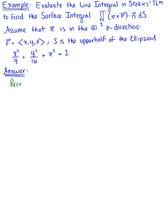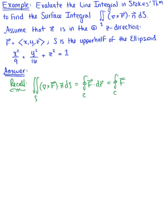So what are we trying to do here? We're trying to evaluate the double integral of Stokes' theorem, but not using this double integral. We instead want to use the line integral — that's the line integral over our closed curve C of the vector field dotted with the differential dR. We'll want to convert this to the parametrized vector field dotted with the tangent vector dt, using a vector line integral to evaluate the surface integral.